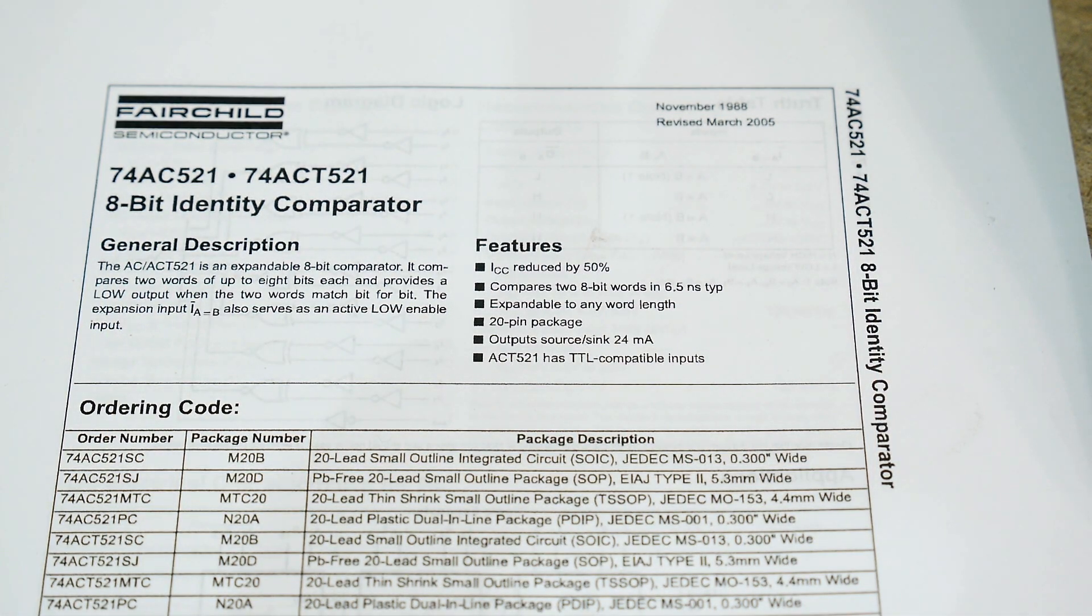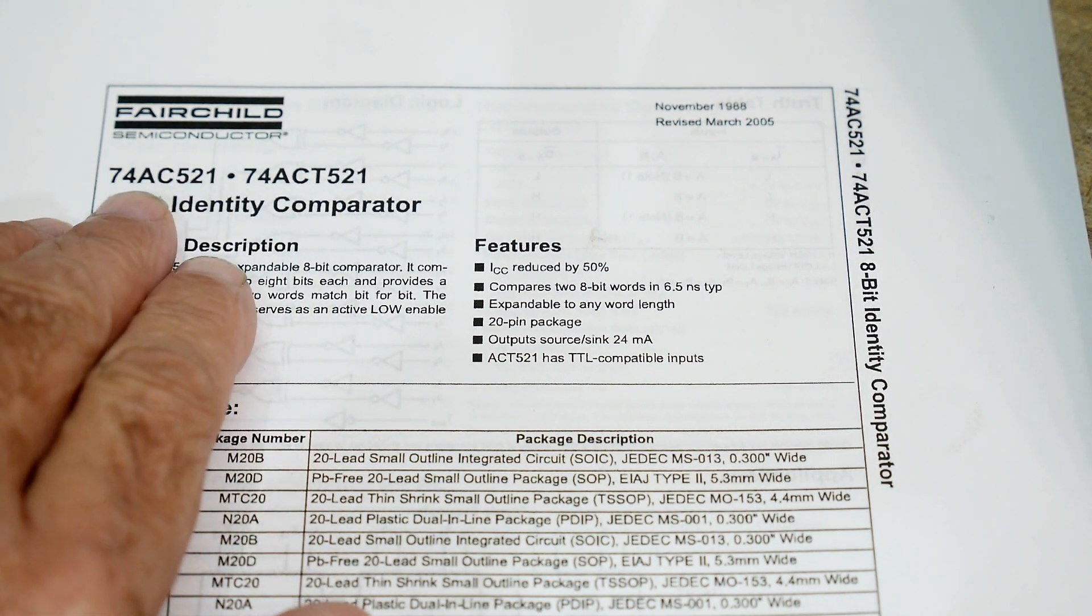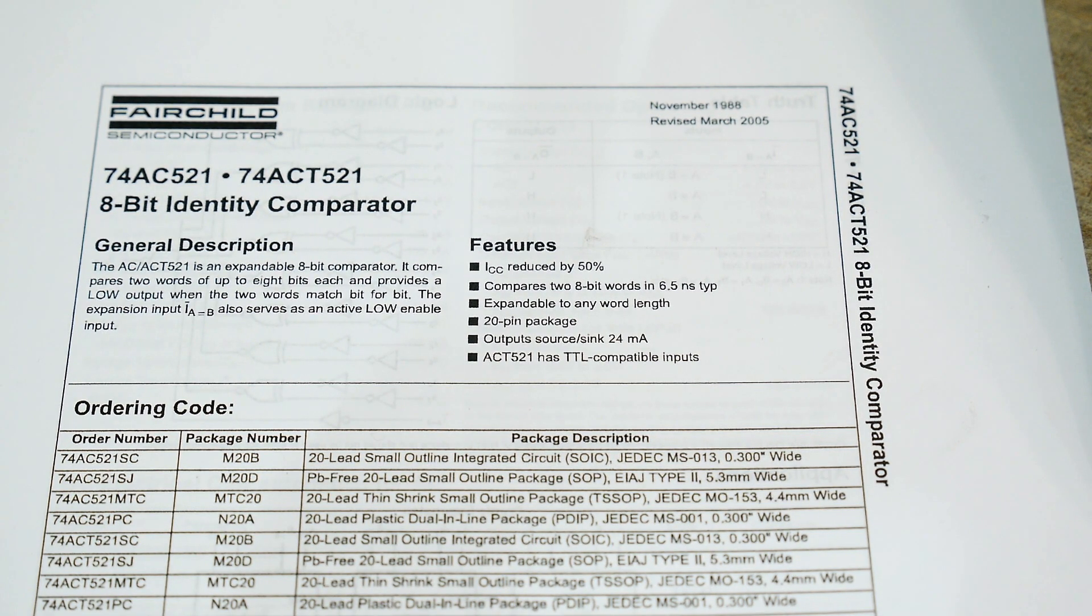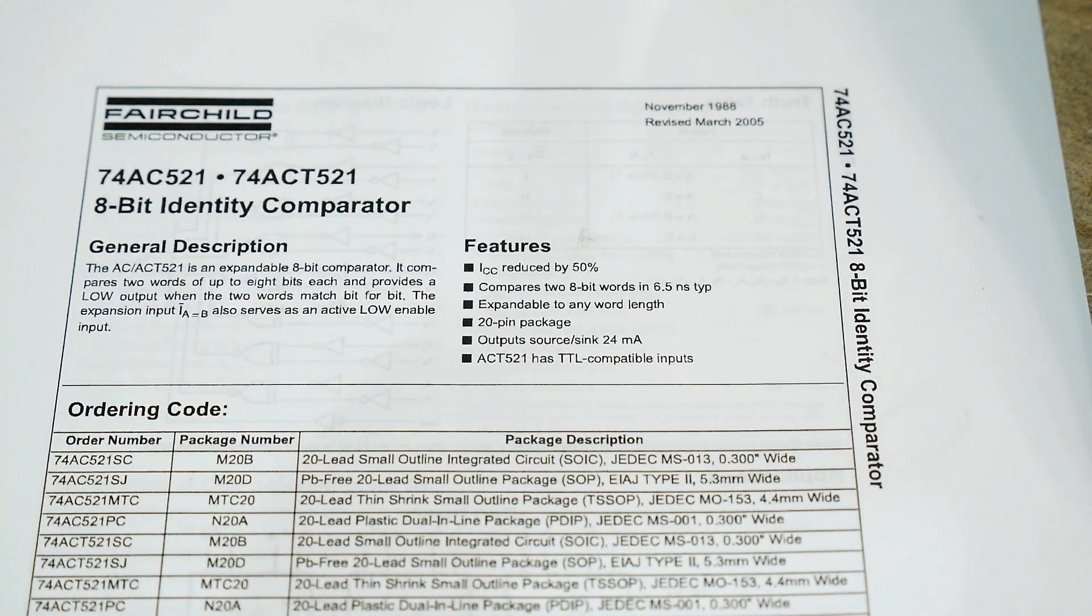All right, chip of the day everybody. This one happens to be a 74AC521. We haven't had any AC parts on the bench yet. That's Advanced CMOS, a much faster part. I believe they're good up to 90 megahertz, pretty fast parts.